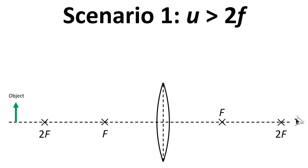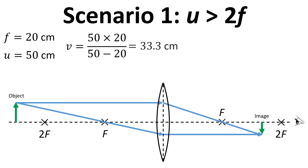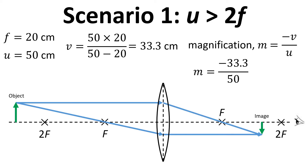We're going to look at four scenarios of image formation. Our object is a green arrow pointing upwards. In scenario one, the focal length is 20 centimetres and u is 50 centimetres. Drawing the rays graphically shows where they converge. Using the rearranged thin lens equation with these numbers gives v equals 33.3 centimetres. Magnification is minus v divided by u, giving a magnification of minus 0.67.